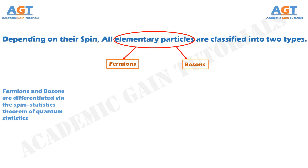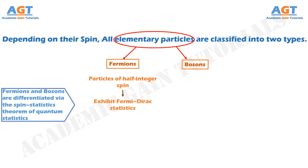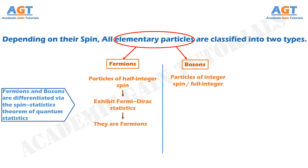The particles of half-integer spin exhibit Fermi-Dirac statistics and they are called fermions. On the other hand, the particles of integer spin, or full integer spin, exhibit the Bose-Einstein statistics and they are called bosons.